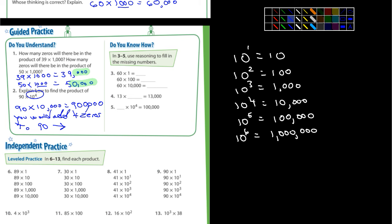Looking at three through five, use reasoning to fill in the missing numbers. 60 times one you know is 60. 60 times 100 is 60, and then add two zeros. 60 times 10,000, it's going to be 60 and then I'm going to add four zeros, and then I'm going to count every three places and put a comma.